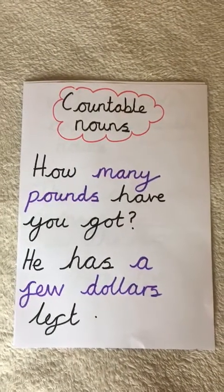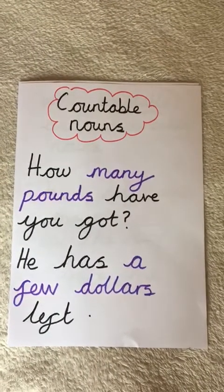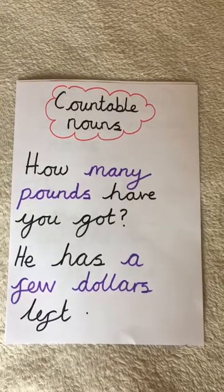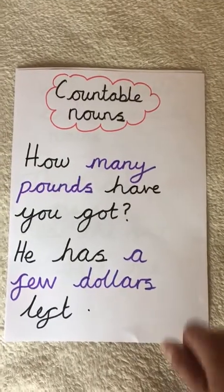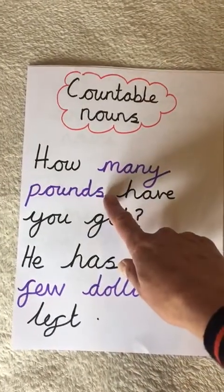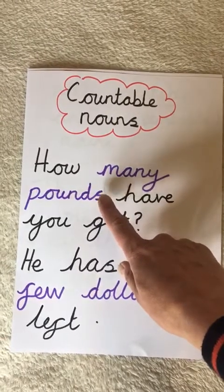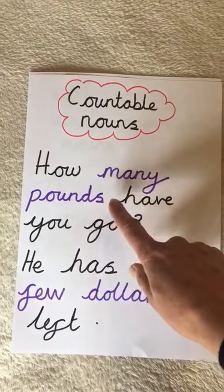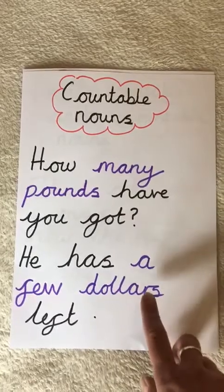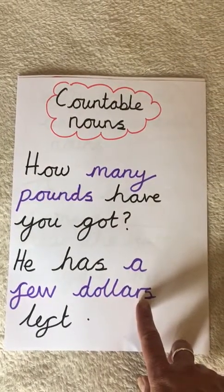Can you recognise the countable nouns in these sentences? Here we've got 'pounds,' which is the plural form of 'pound,' and here we've got 'dollars,' which is the plural form of 'dollar.'